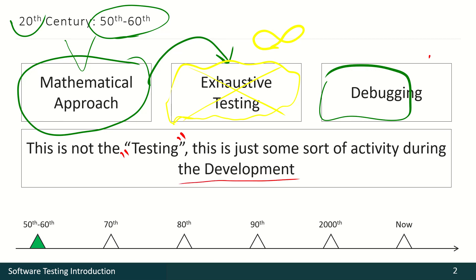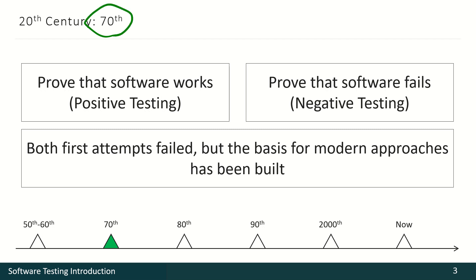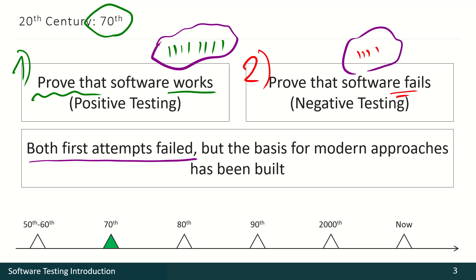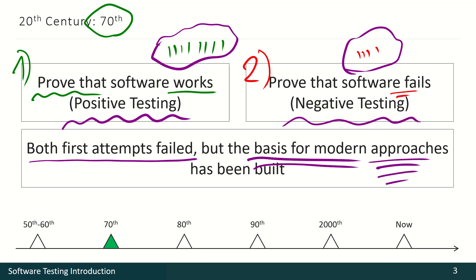It took the industry several years to understand that classical debugging did not work well anymore, so new ideas came into life. The first idea was to prove that software works in some known conditions — but it was not enough. The second idea was to prove that the software fails in other known conditions. Both attempts fell short, because we cannot predict all those known and, much more importantly, unknown conditions. But these approaches transformed through years into positive and negative testing, creating a basis for other more modern approaches.